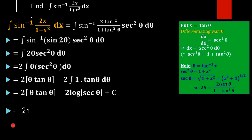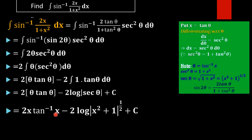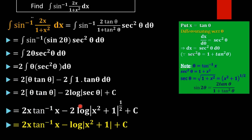Substituting back, we get 2x · tan⁻¹(x) minus 2·log|(x² + 1)^(1/2)|. Using the logarithm property log|x^a| = a·log|x|, the factor of 2 and 1/2 cancel each other. The final result is 2x · tan⁻¹(x) − log|x² + 1| + C.